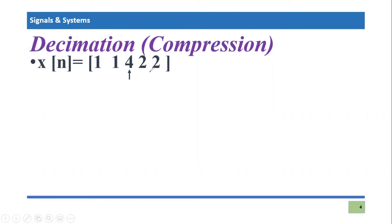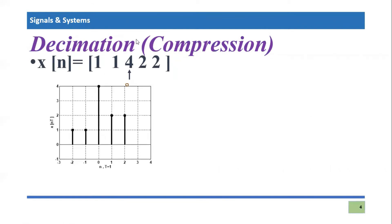Now let's perform this in graphical form. This is the same discrete time signal having values {1, 1, 4, 2, 2} with the zeroth bin indicated. In graphical form you can verify that at the zero bin the signal value is four, at bin one and bin two the value is two. This discrete time signal is defined from minus two to two. To compress it we apply the same scaling factor of two — replacing n with 2n — so we divide each bin number by the scaling factor.